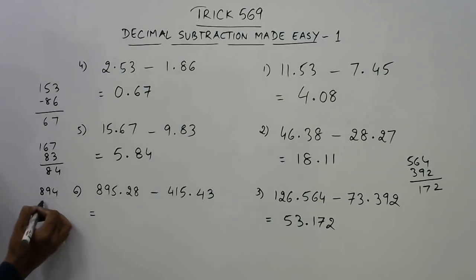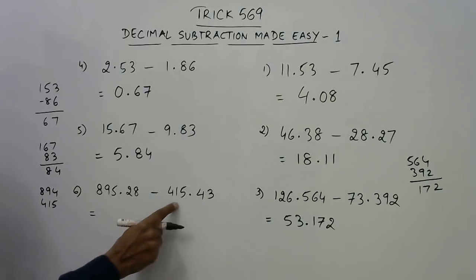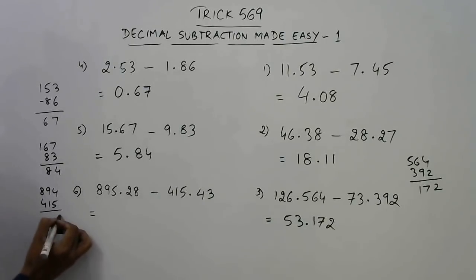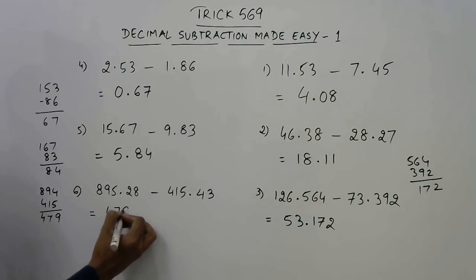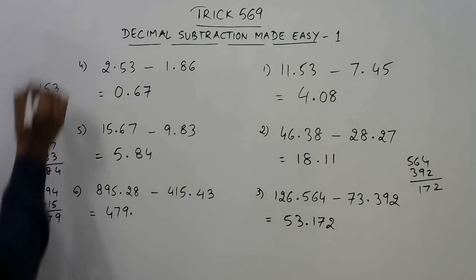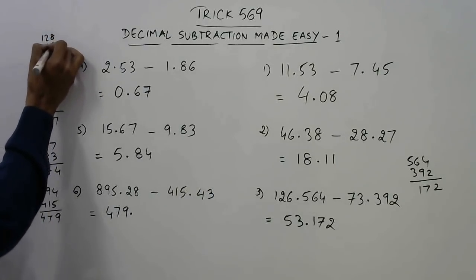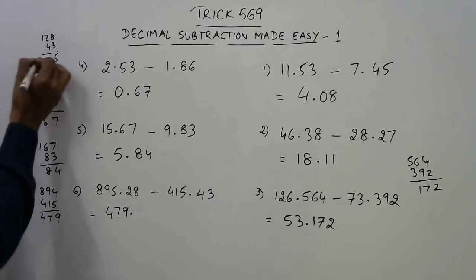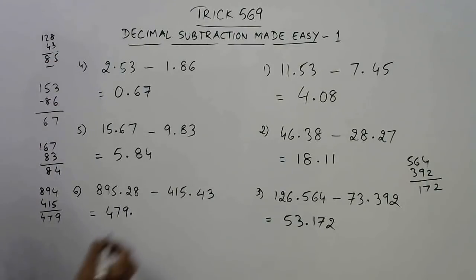So 894 and subtract 415, this number you get 9 7 and 4, so 479 point. And what comes after the decimal place? You have to find the difference of 128 and 43. So 128 and 43, the difference is 85, and this comes here after the decimal place.